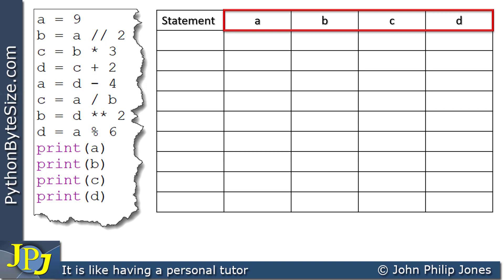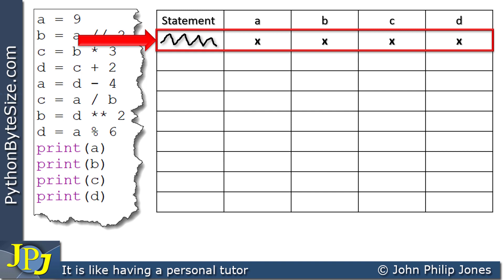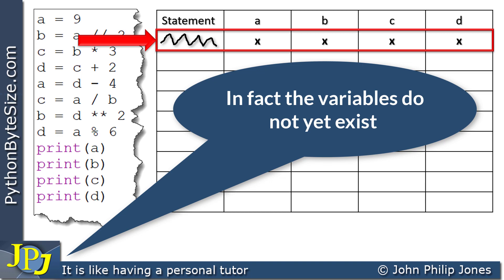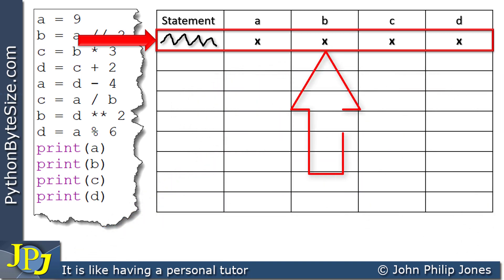The first thing we need to consider are the don't care conditions that I am filling in here, highlighted with a red box. I've put an X in all of the columns under the variables A, B, C, and D, and a squiggle under the statement. This is telling me the condition of the variables before the program executes — I refer to these as the don't care conditions. It doesn't mean I don't care what they are; it means the program has not affected any of the variables yet. I always get into the habit of putting this line in first.